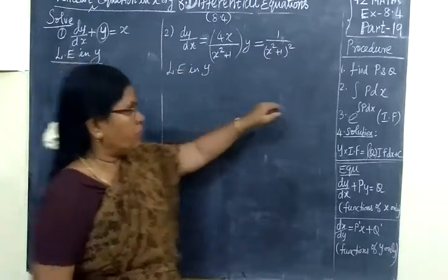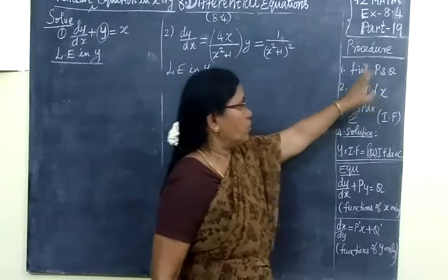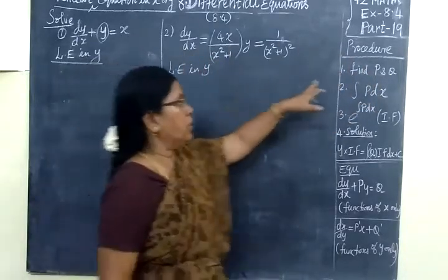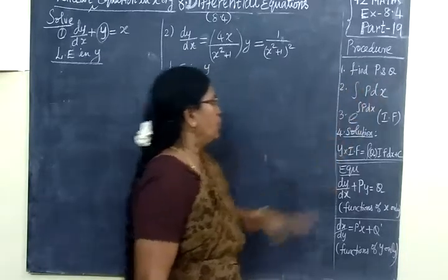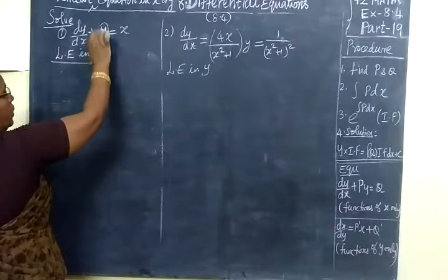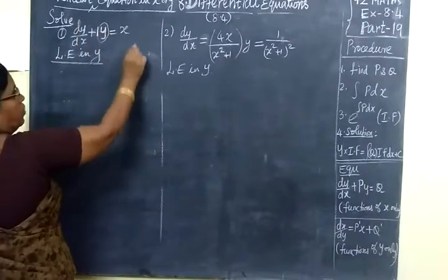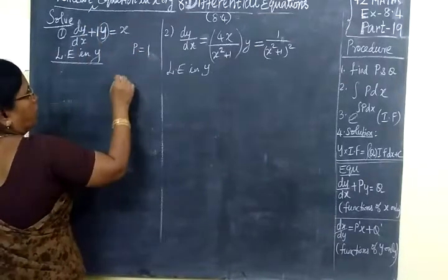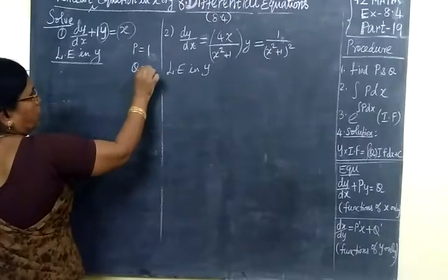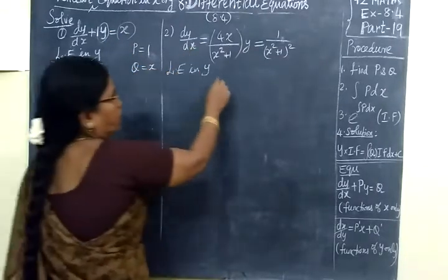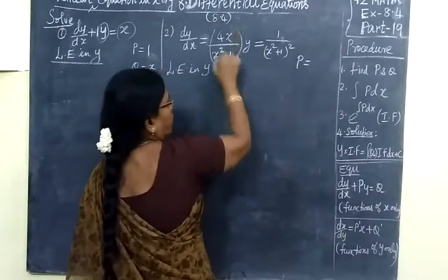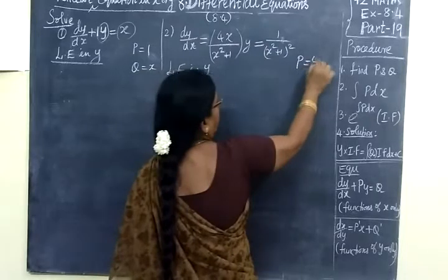Next we want to find P and Q. For a linear equation in y, we compare and identify the coefficients. Here the coefficient of y gives P equal to 1, and the right-hand side gives Q equal to x.